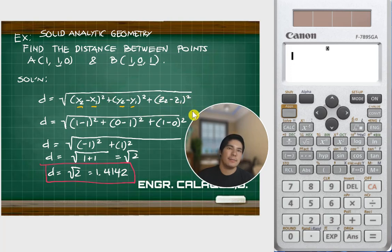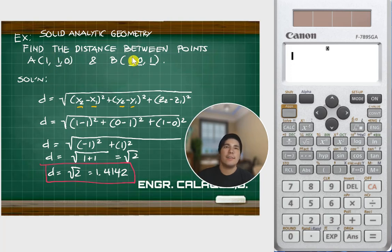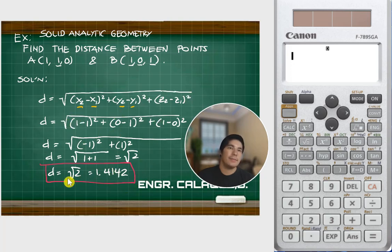We have x₁, y₁, z₁ and x₂, y₂, z₂. Inputting those values into the distance formula, we get the square root of 2, which is 1.4142, using our Casio calculator.